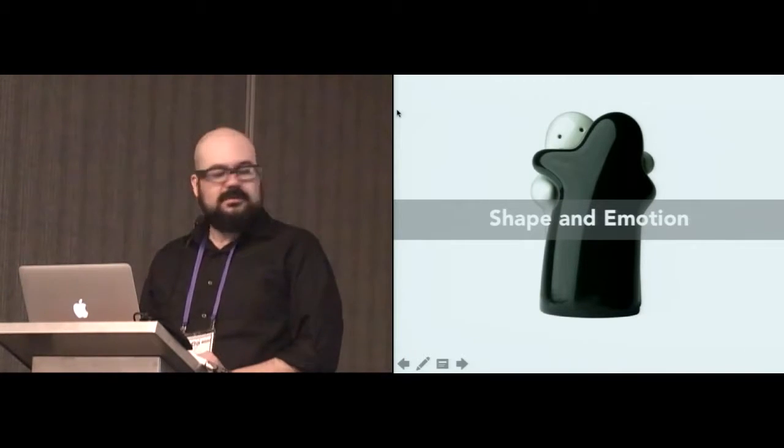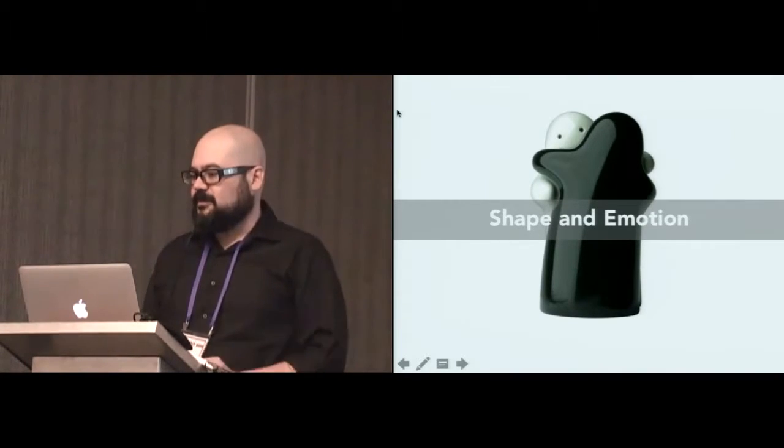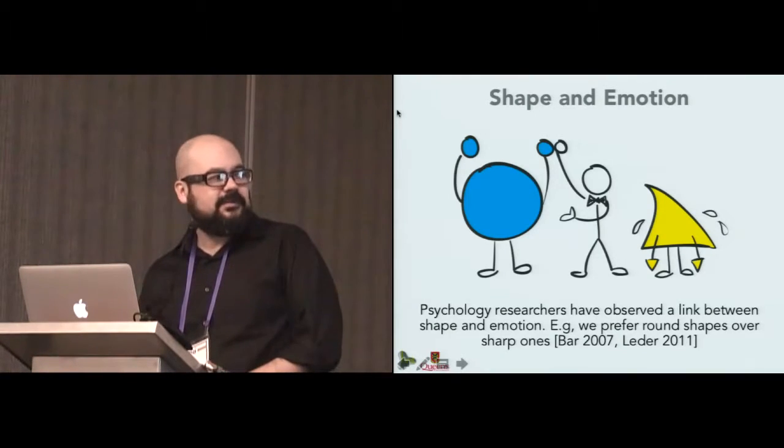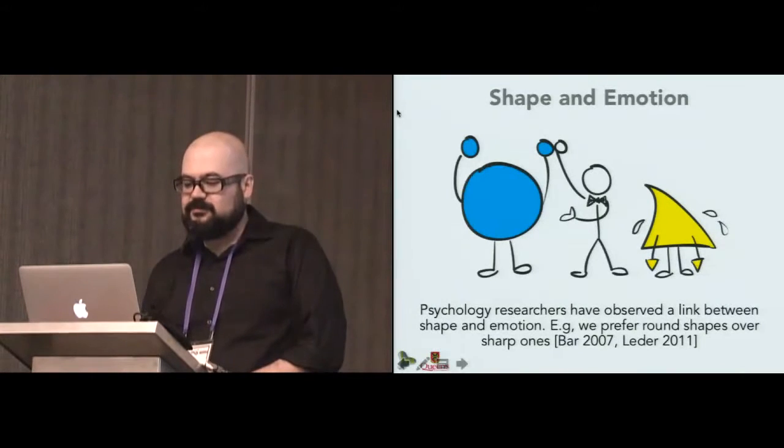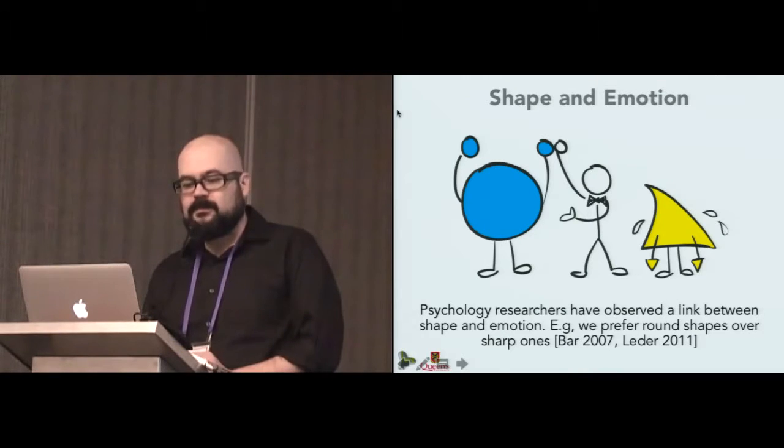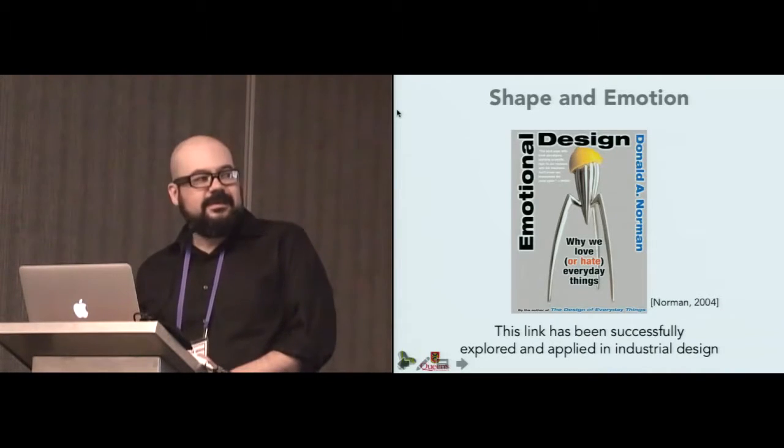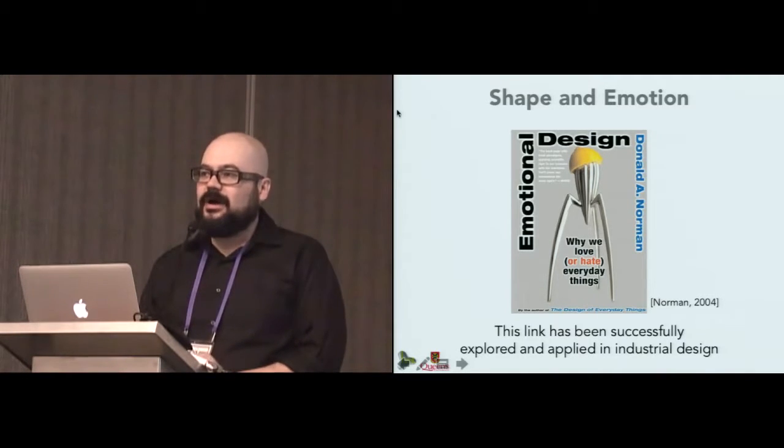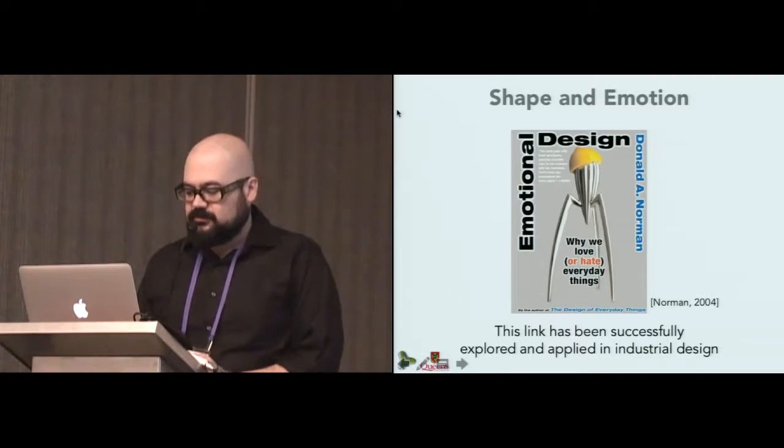So shape and emotion. Psychologists have studied the link between shape and emotion for a long time. For instance, one of the things that have been observed is that humans have a preference for rounded shapes as opposed to more acute or sharp ones. This was actually mentioned in a very interesting talk yesterday on embodied interaction.